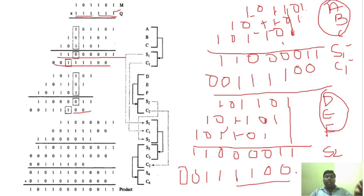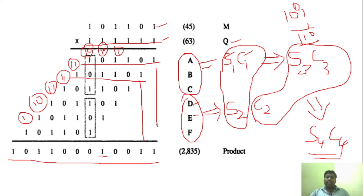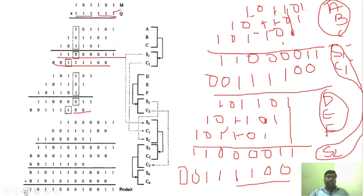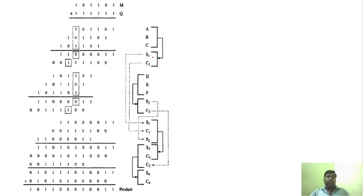Now the next step: we group S1, C1, and S2 together. Bring S1 and C1 from the first group and S2 from the second group. Pay careful attention to bit positions — S2 starts at the fourth bit, so write it starting from the correct position. We will now perform carry save addition on this new group of three vectors.